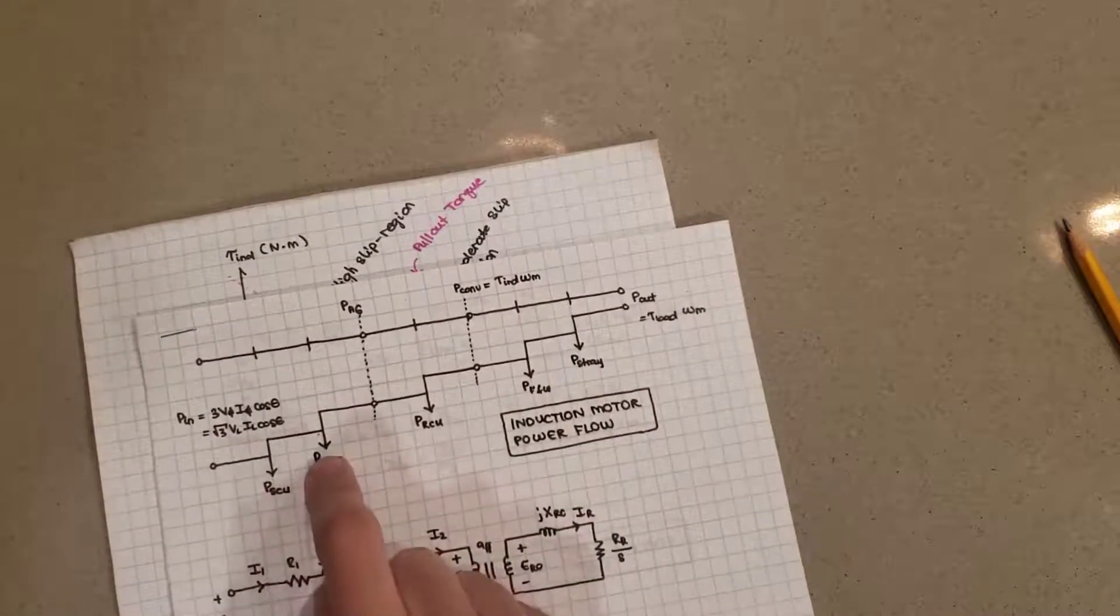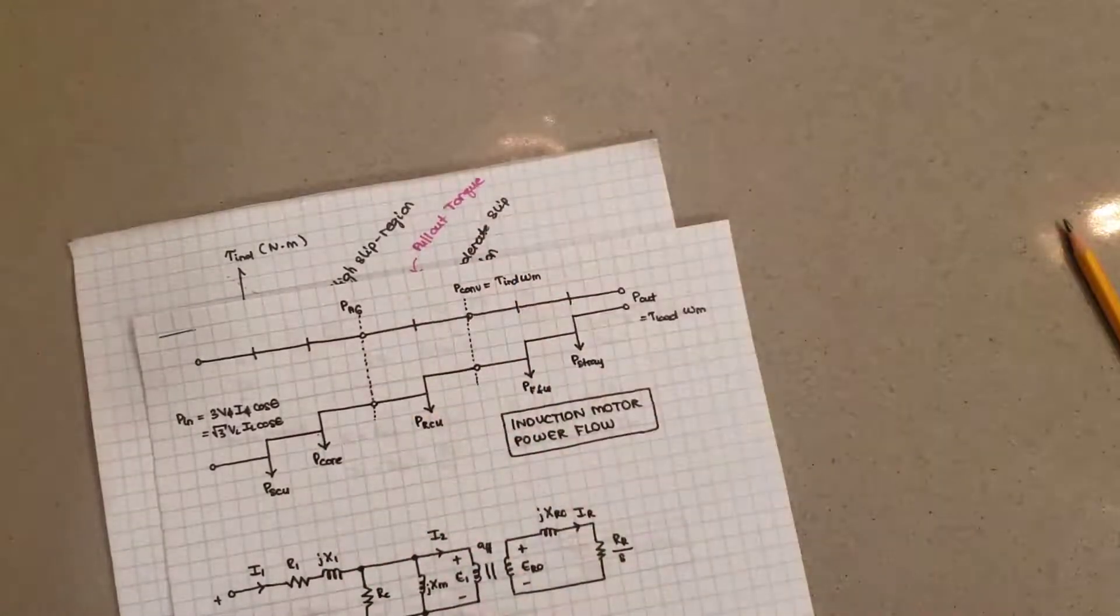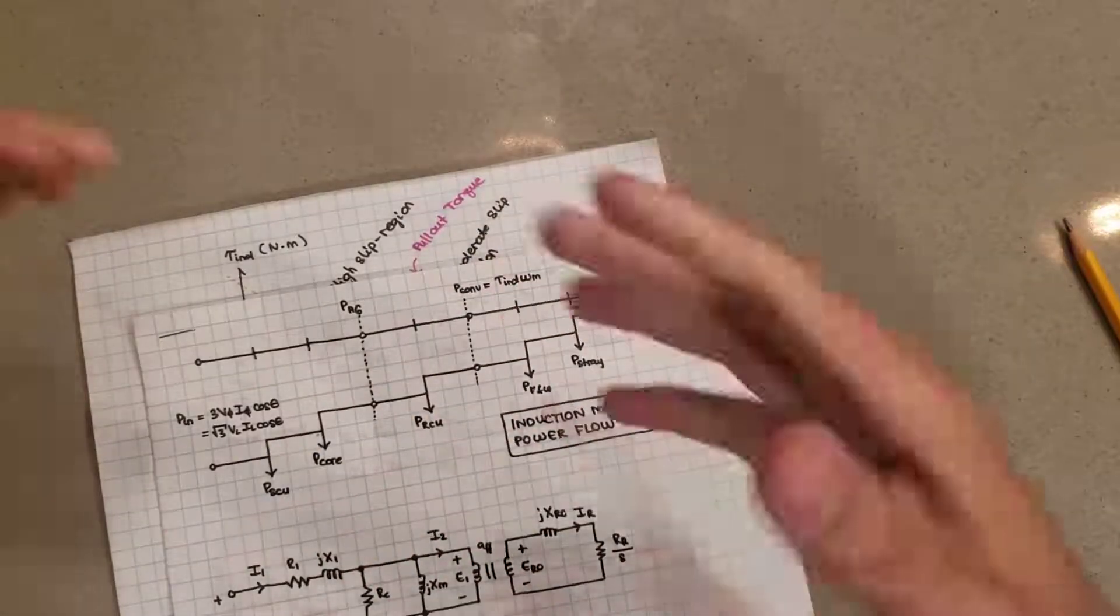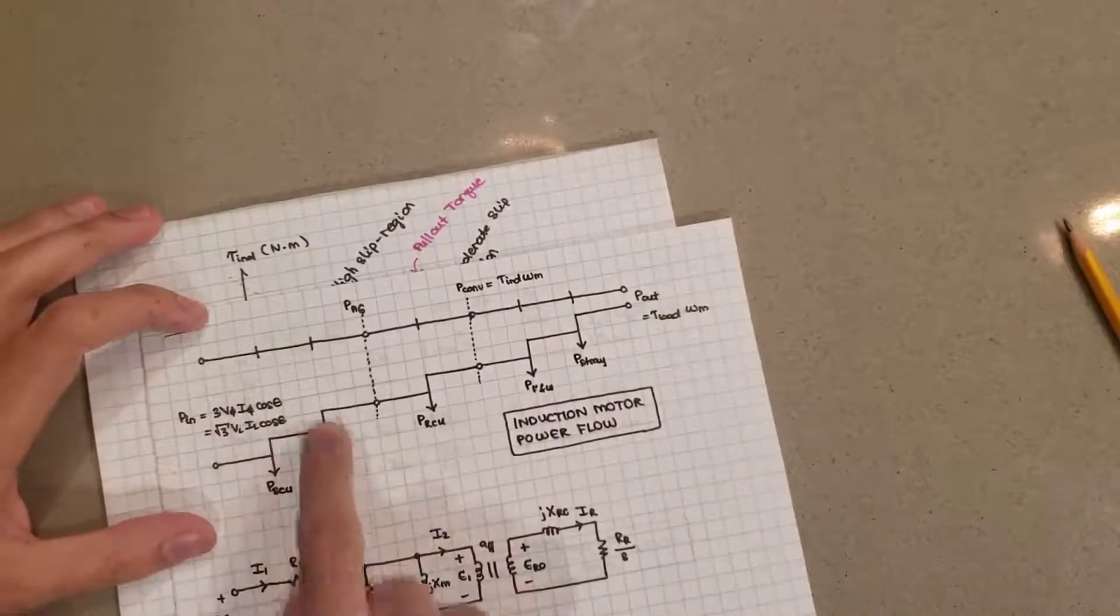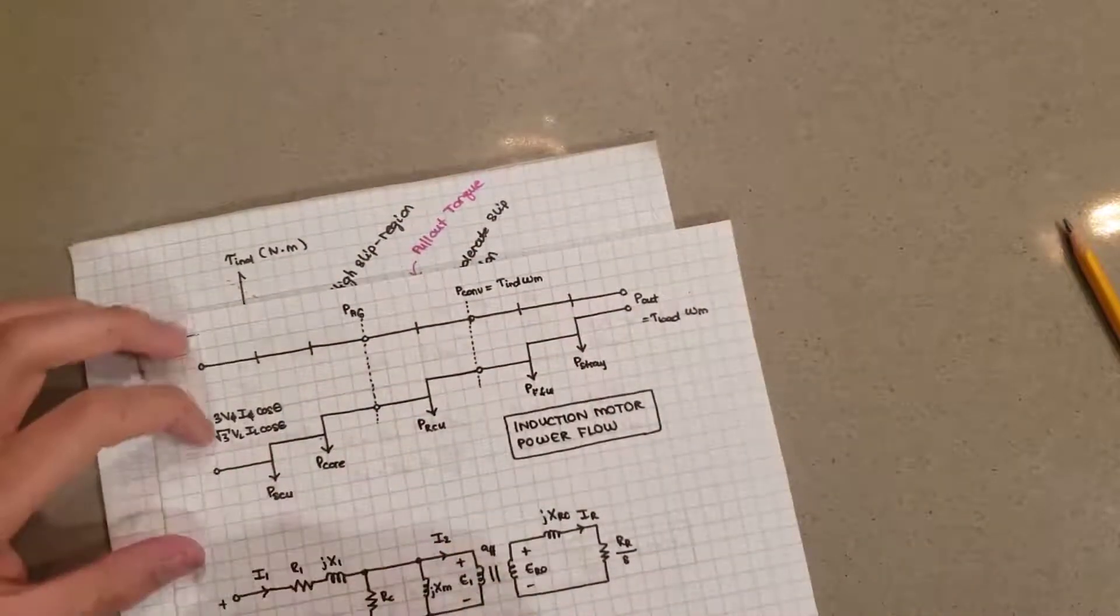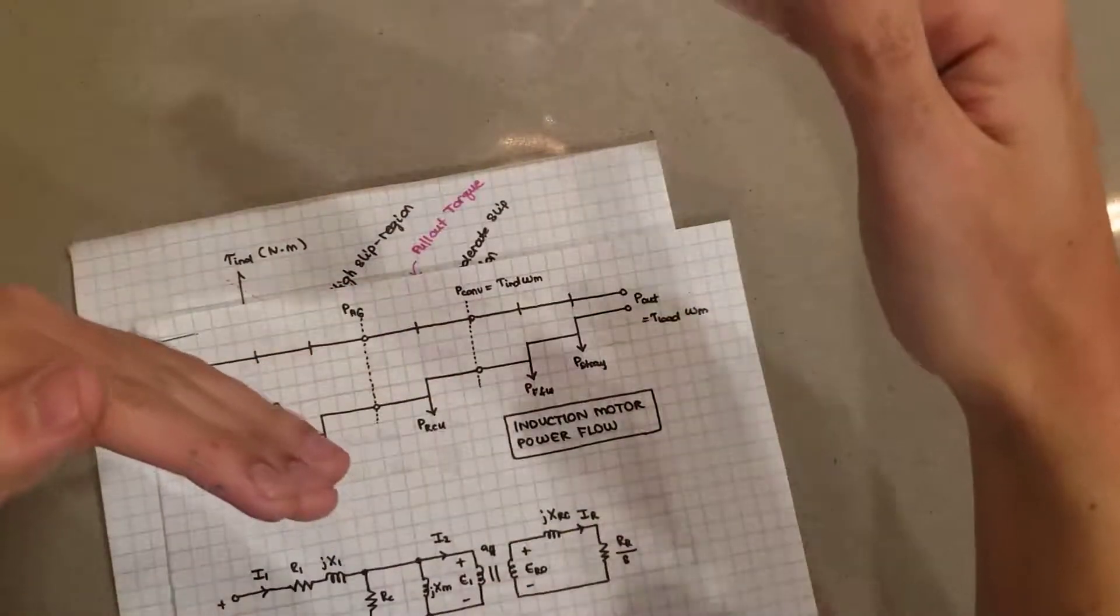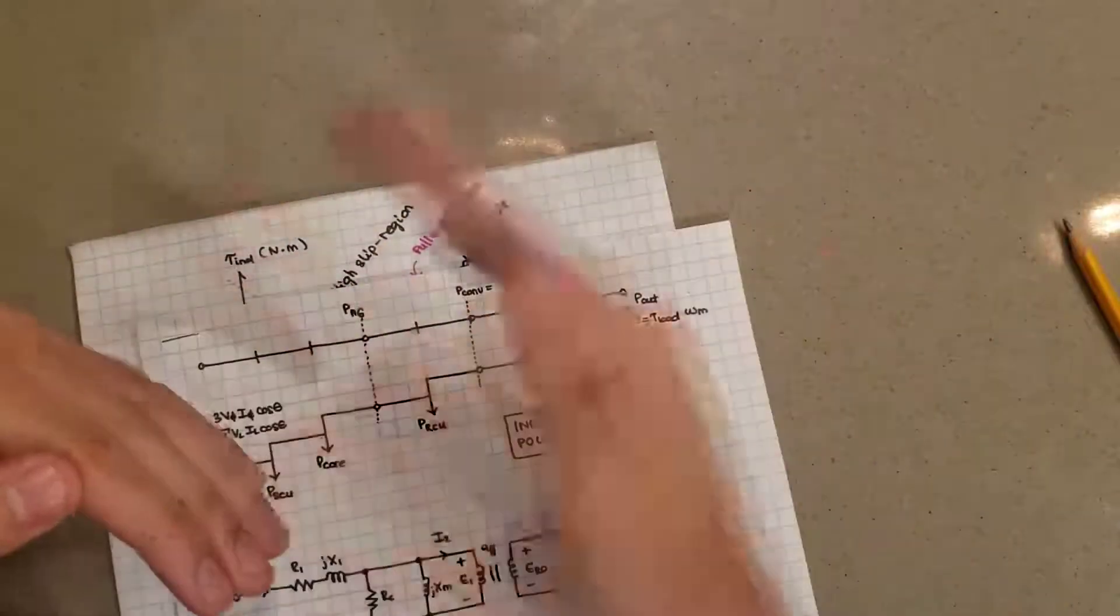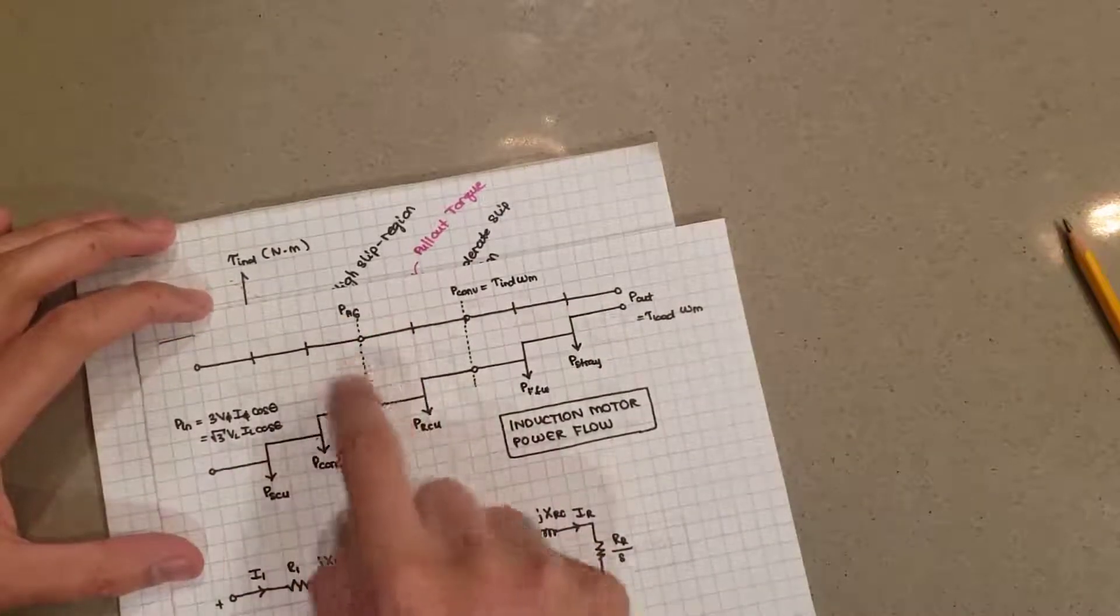First of all, some of that power going in is going to get lost as copper losses in the stator. And then some of that is also going to get lost as core losses because there's the ferromagnetic core there on the rotor and some of that eddy current and hysteresis losses, those are also going to take away power from your initial input. And so once you've taken away those powers, that power now available between the stator and the rotor, that's called the air gap power over there. That is the result of subtracting these two.